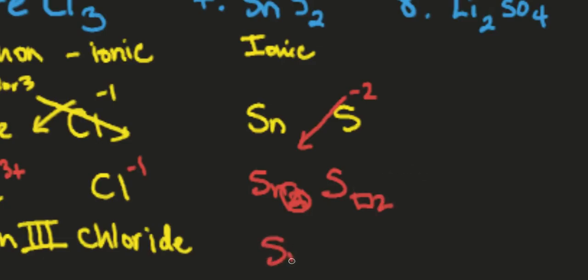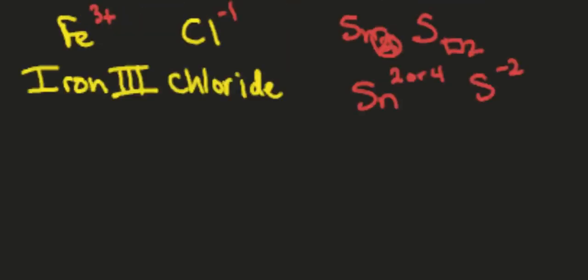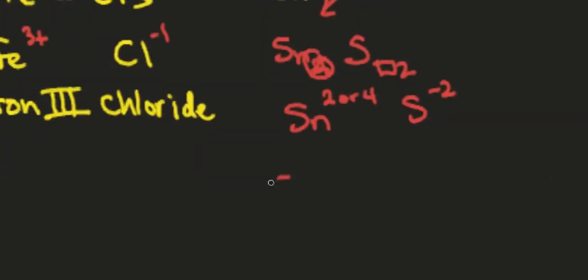So our choices are either two or four. And this has to be a minus two. So let's look at our two options. If I did Sn2 S2 versus Sn4 S4. Now the question is which one of these reduces to our original?